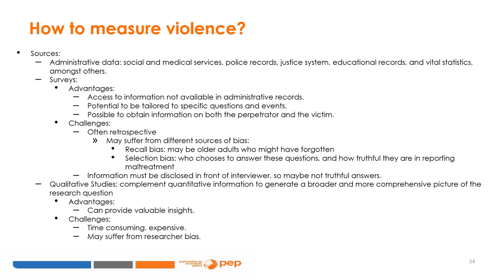With these definitions of violence, how do we measure it? We have several forms of obtaining data, including administrative data and surveys. Administrative data can include social and medical services, police records, justice system records, educational records, and other vital statistics. Among the advantages is the possibility of accessing high-quality data for large fractions of the population. But sometimes administrative records do not contain relevant or up-to-date information.